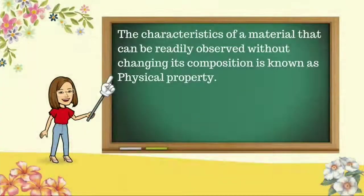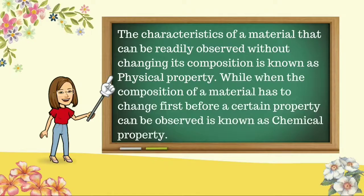The characteristics of a material that can be readily observed without changing its composition is known as physical property. While when the composition of a material has to change first before a certain property can be observed, it is known as chemical property.